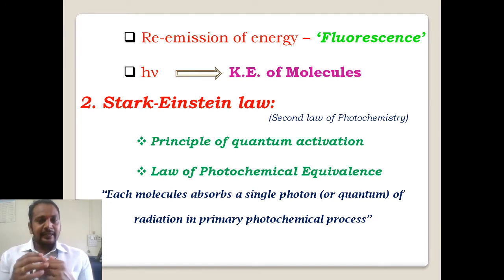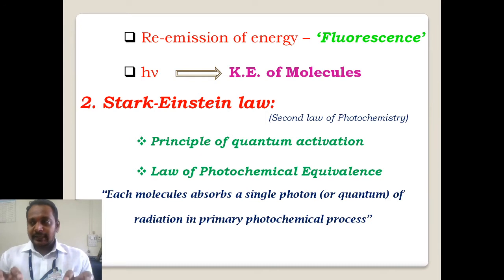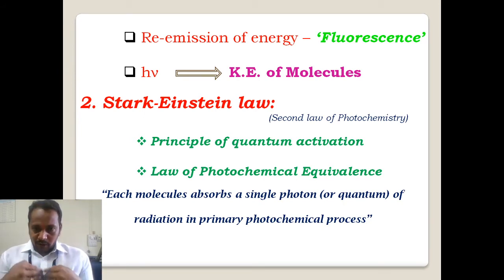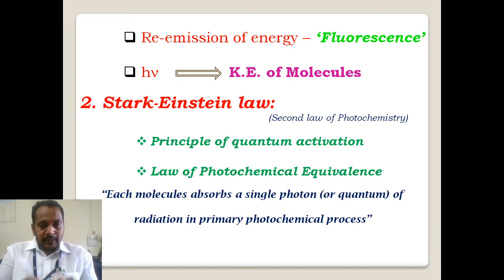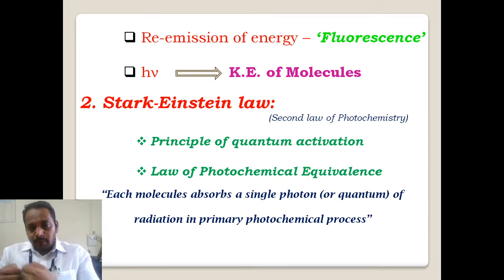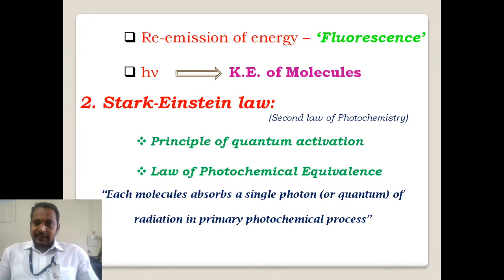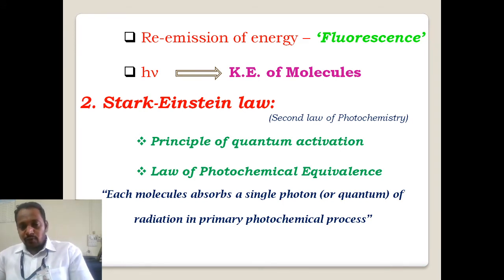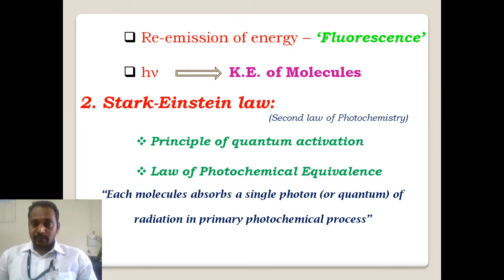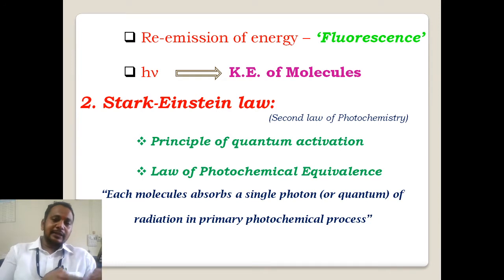At the excited state, any chemical reaction cannot take place while the molecules are stationary or stable. The molecules have to move and collide with each other. For that collision, each molecule needs some energy for its motion — that energy is kinetic energy. So some energy of the absorbed light is utilized to provide the kinetic energy of a molecule, and that kinetic energy is necessary for carrying out the photochemical change. Hence, not all absorbed energy is effective for a chemical change.